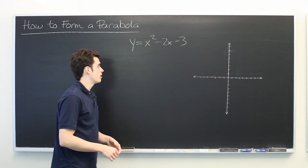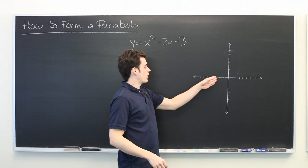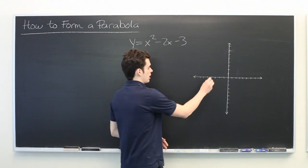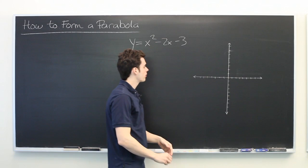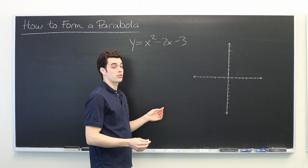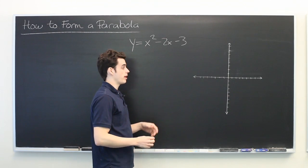One method would be to simply take x values and plug them into our equation, see what y values we get, and make points one by one. That will certainly work, but we can find some more interesting information about this parabola before we begin.